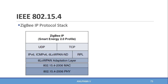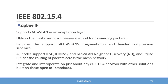The smart energy profile uses ZigBee for smart metering and residential energy management. ZigBee IP supports 6LoWPAN as an adaptation layer and utilizes the mesh-over or route-over method for forwarding packets. It requires support for 6LoWPAN fragmentation and header compression schemes. All nodes support IPv6, ICMPv6, and LoWPAN neighbor discovery, and utilize RPL for routing packets across the mesh network, making mesh the primary topology supported by ZigBee IP.